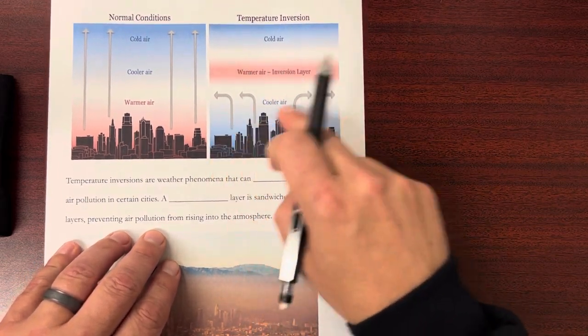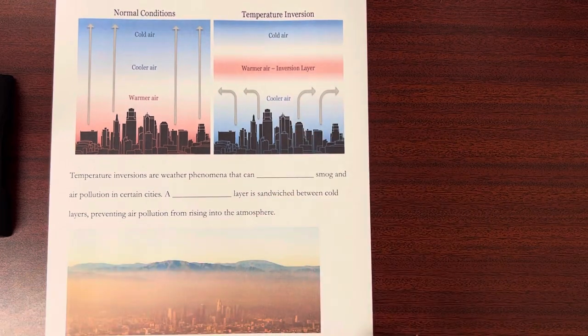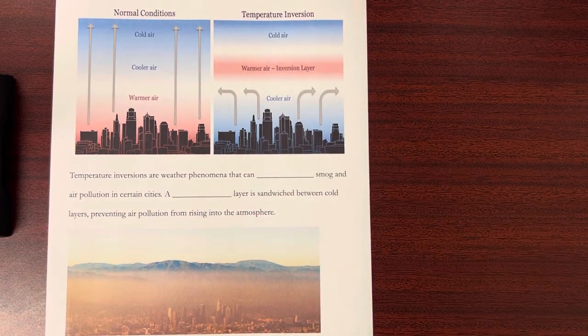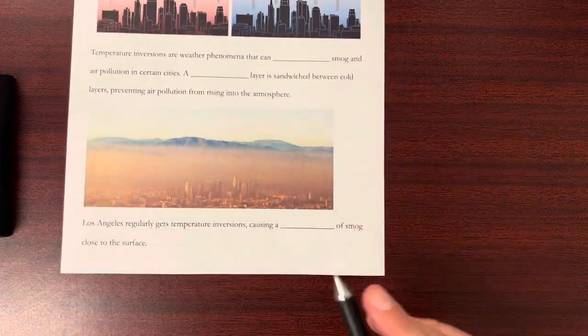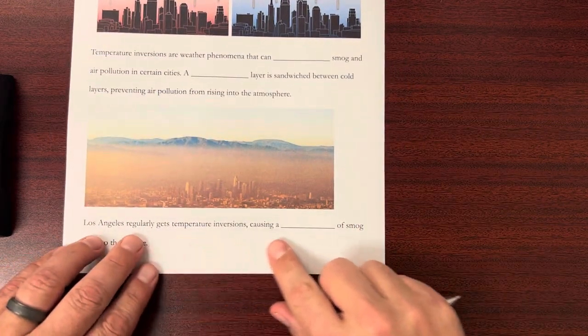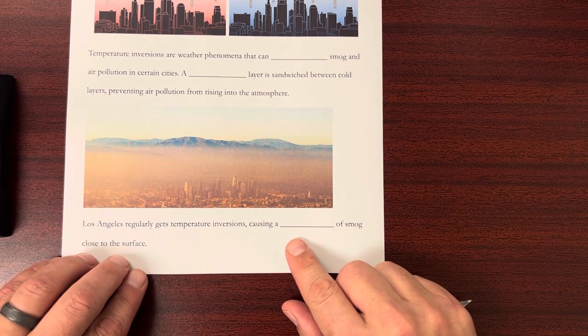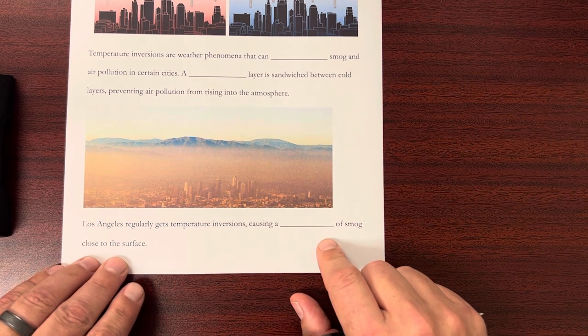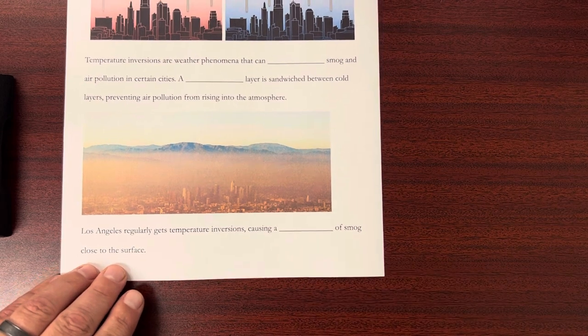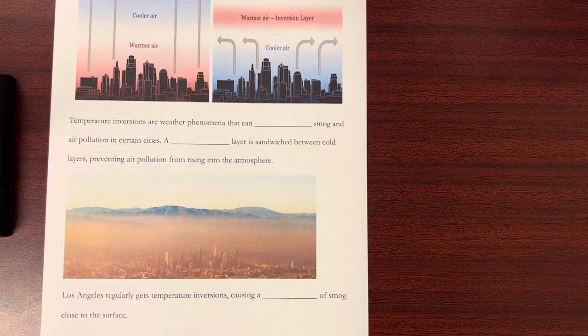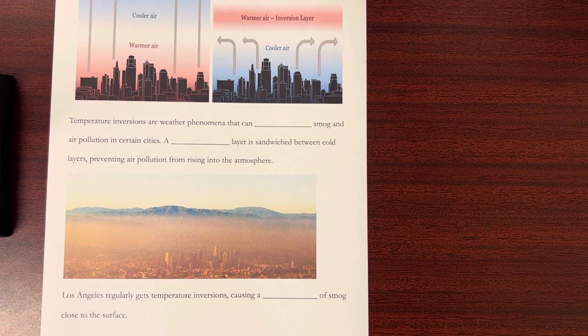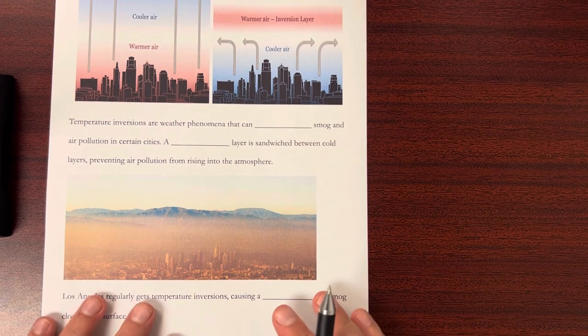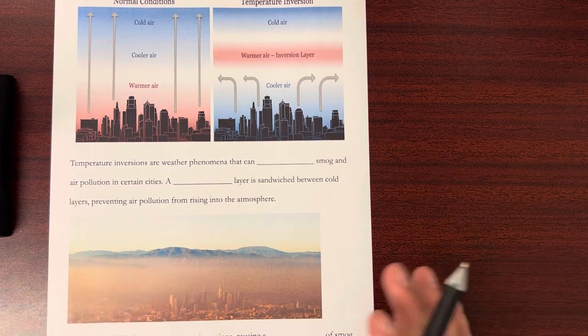So it just kind of builds up. The smog builds up and builds up. If I ask you to think of a city that has lots of smog, you might think of Los Angeles. And in fact, Los Angeles regularly gets temperature inversions causing a buildup of smog close to the ground. A lot of times this is under very specific conditions. We see it in the mornings in these cities because of how it's produced, and it doesn't necessarily last all day long.